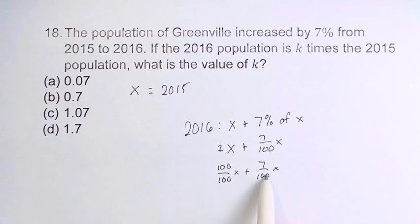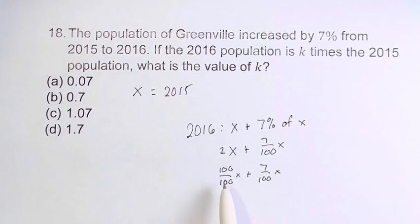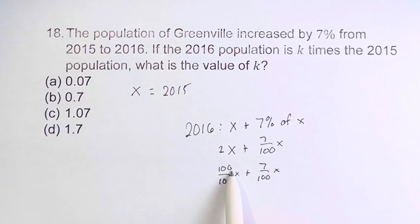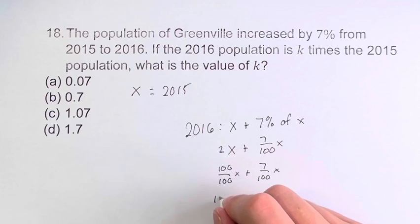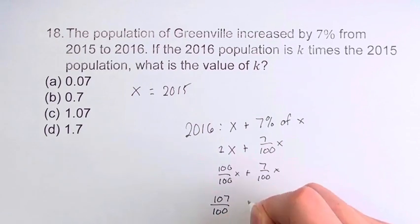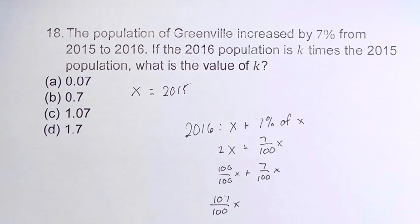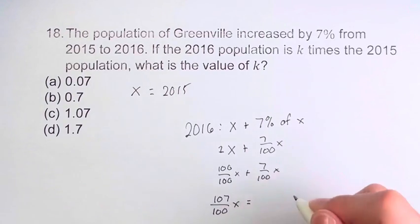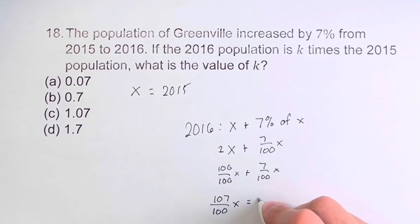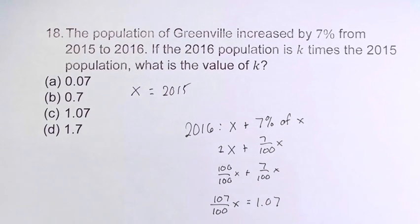We have the same denominator, which is why I turned this into 100 divided by 100. So, we have 100 out of 100x plus 7 out of 100x. We have 100 plus 7, which is 107, over 100x. What is this equal to? 1.07.